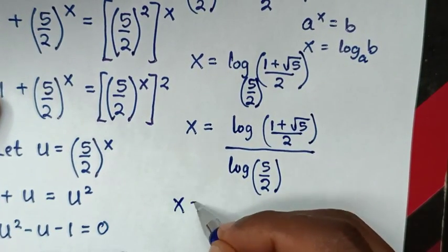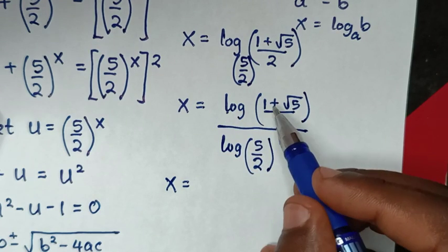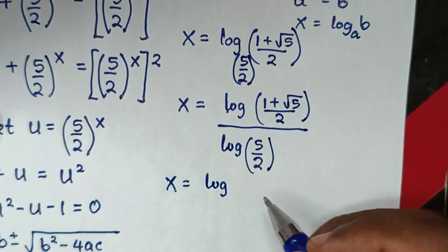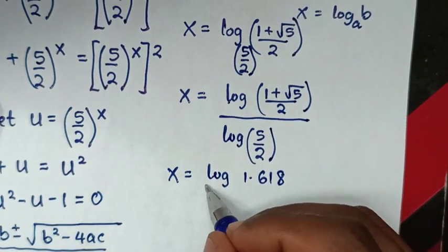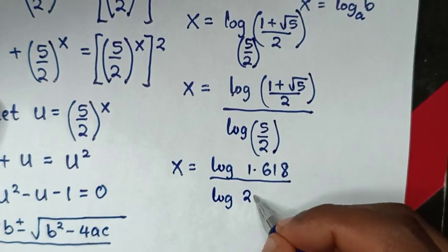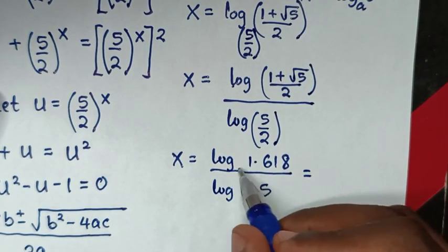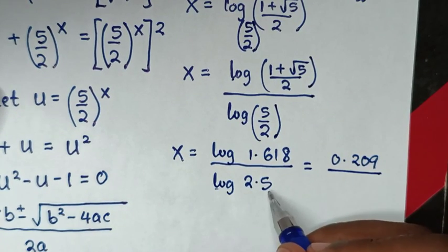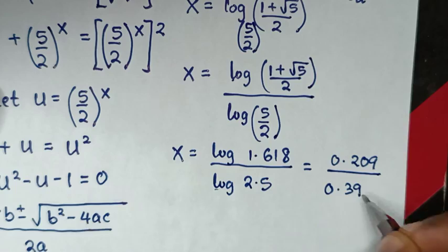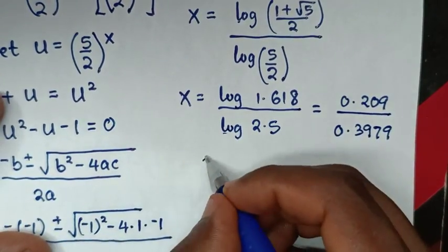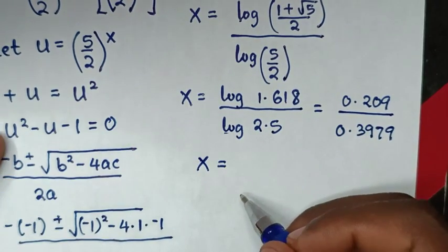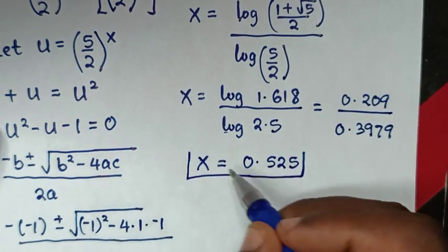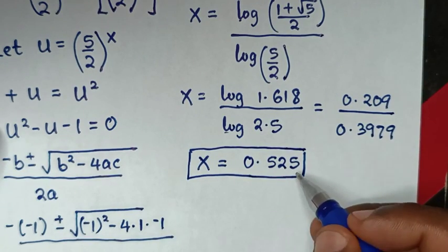Substituting into the calculator: the value of (1 + √5)/2 is approximately 1.618, so log(1.618) equals approximately 0.209. And log(5/2) equals log(2.5) equals approximately 0.3979. Therefore x equals 0.209 divided by 0.3979, which is approximately 0.525. This is the final answer.